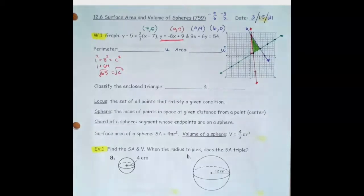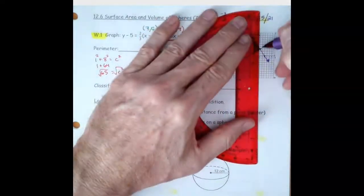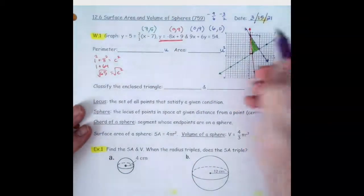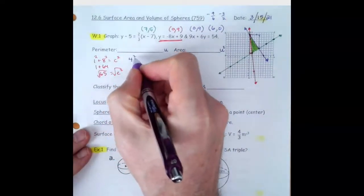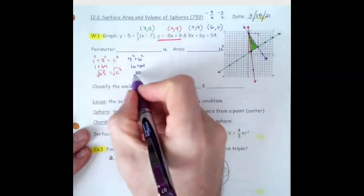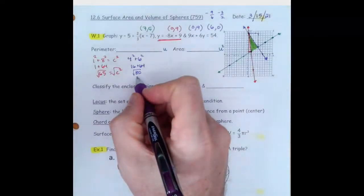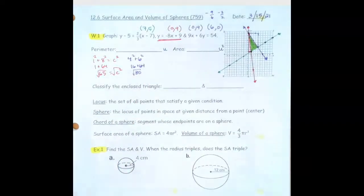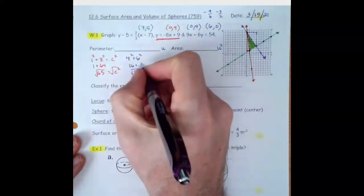Now if we take a look at the purple side here, we go over and up — that's going to be 4 and 6. So that's 4 squared plus 6 squared. That would be 16 and — wait, 6 squared is 36, not 64. Something didn't feel right about that. So 6 squared is 36.